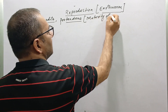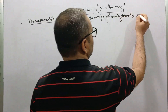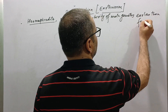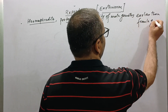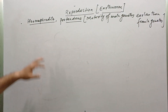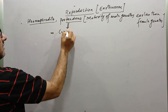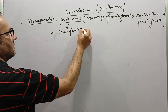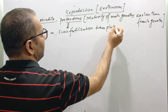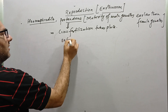Protandrous means maturity of male gametes earlier than female gametes in a hermaphrodite organism. Because they are protandrous, cross-fertilization takes place in earthworm.